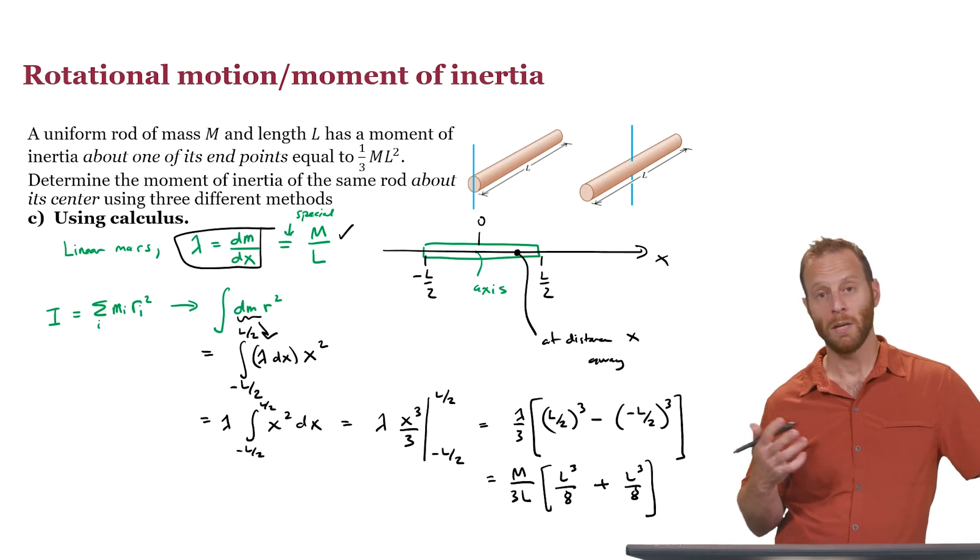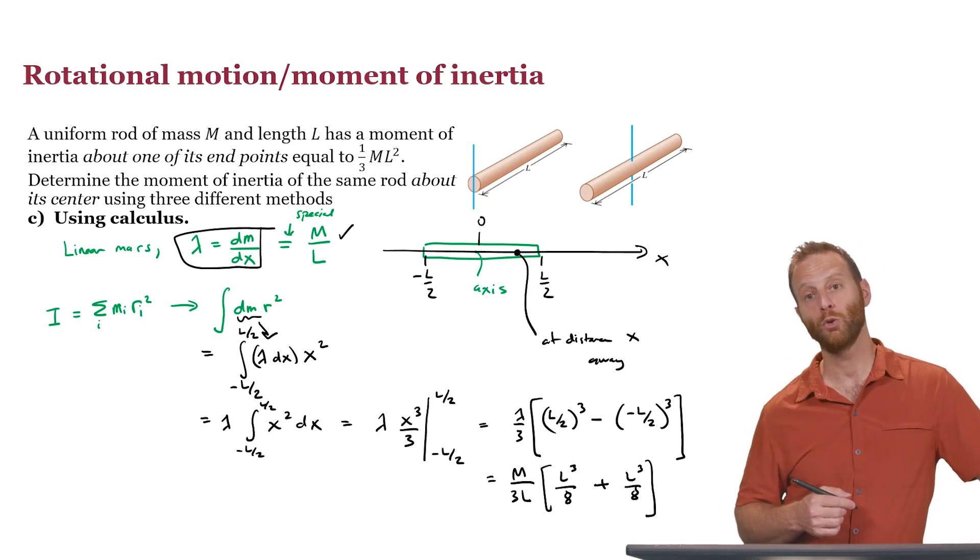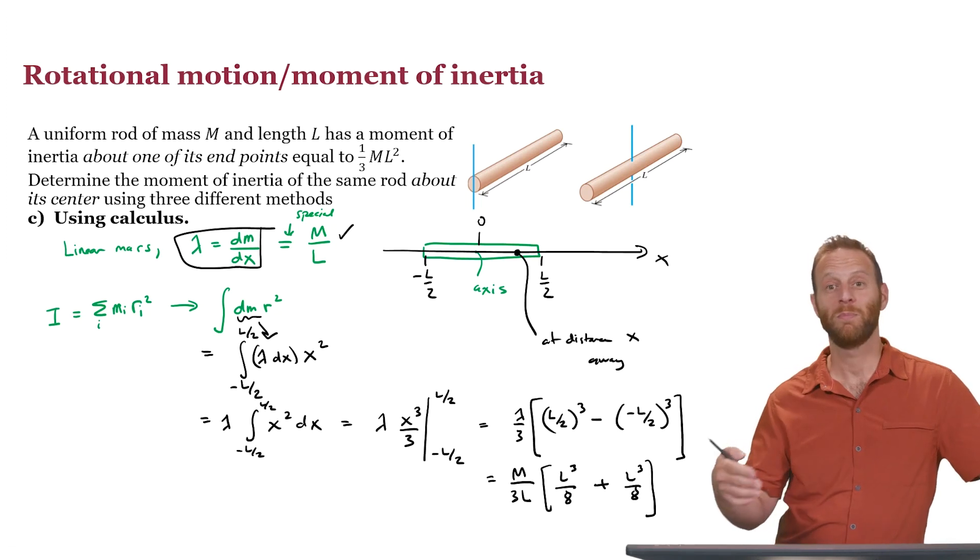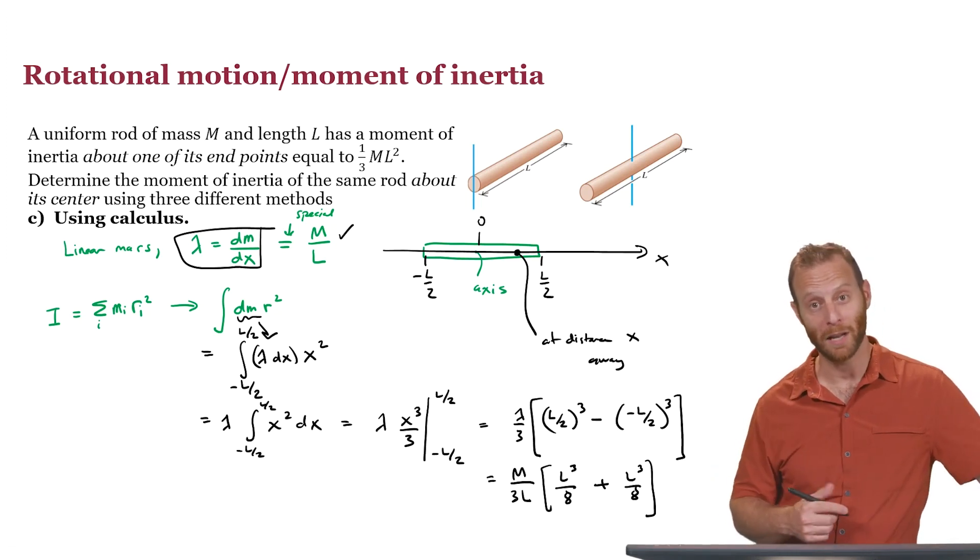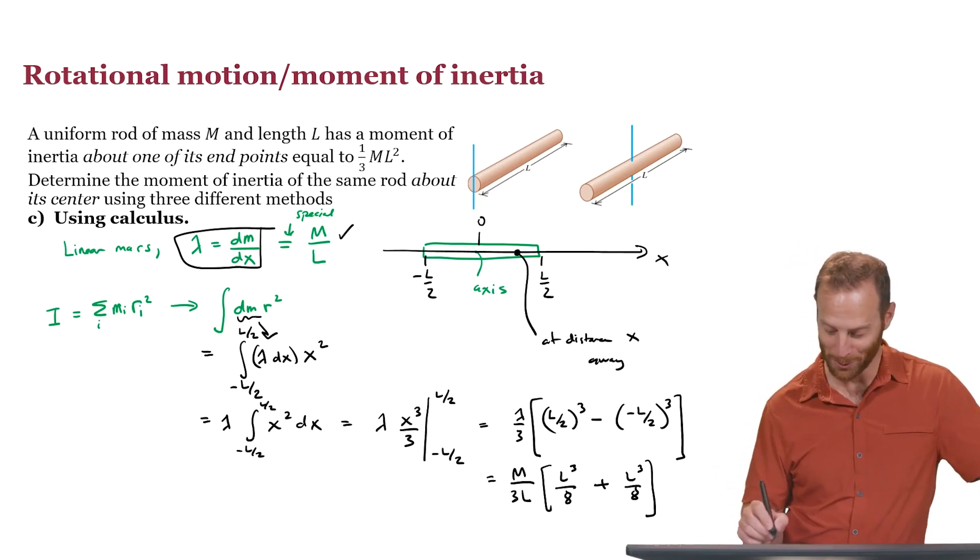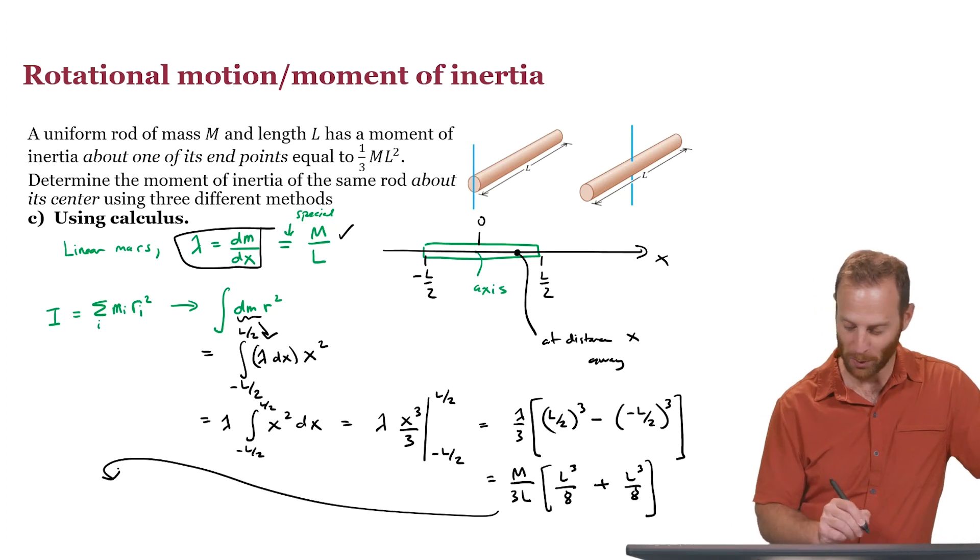So, in brackets, we have l cubed over 4. There's a factor of 3 in the denominator that's going to give us a 12. So in summary, what we're going to end up with is m l cubed over 12l, which is simply 1 over 12, ml squared, confirming our result.